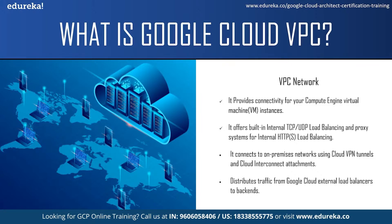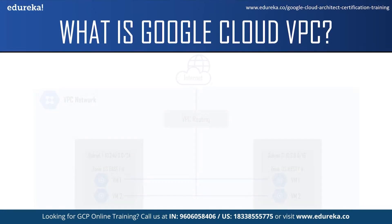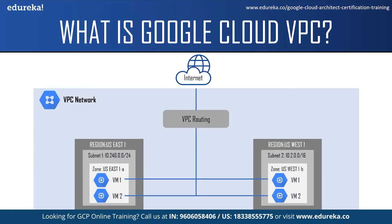To understand VPC networks better, let us take a look at the architecture. Here we have two regions — US West One and US East One — in a VPC network. A region is a specific geographical location where you can host your resources, and a region can have three or more zones. For example, US East One region has three zones: US East One A, US East One B, and US East One C. Zones are independent of each other — they have completely separate physical infrastructure, networking, and isolated control planes — to ensure that typical failure events only affect that zone.